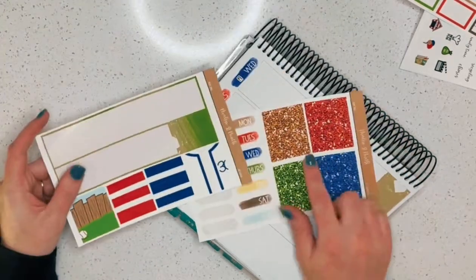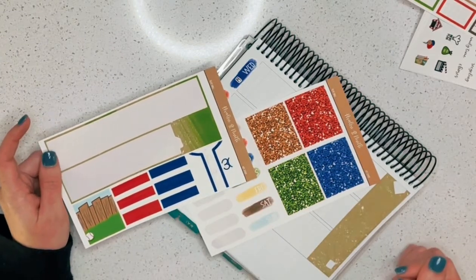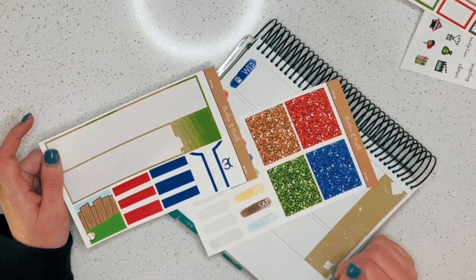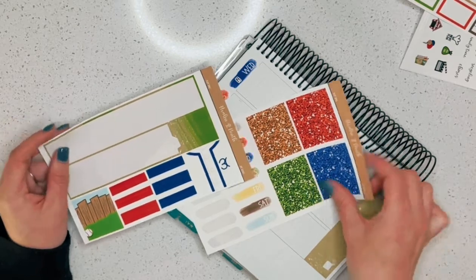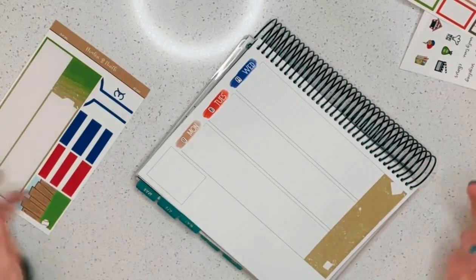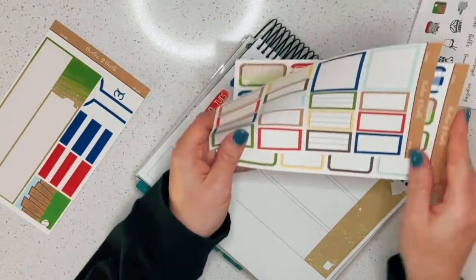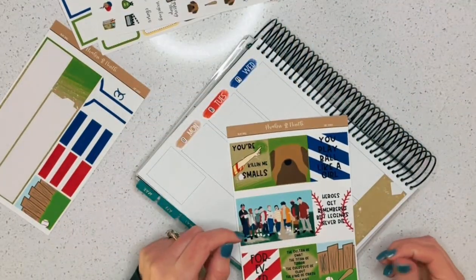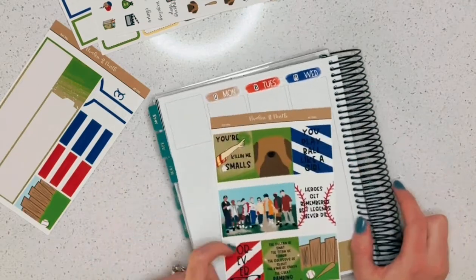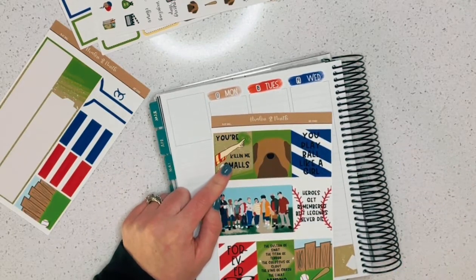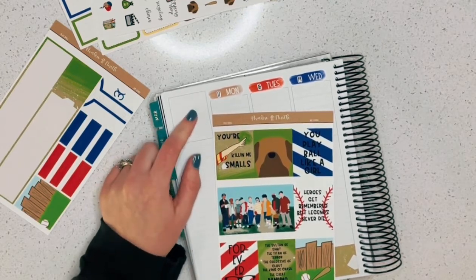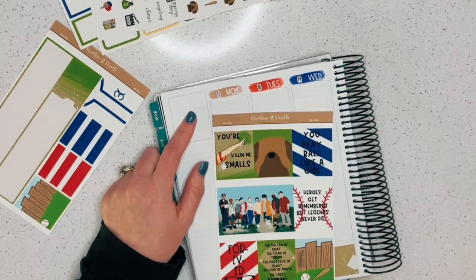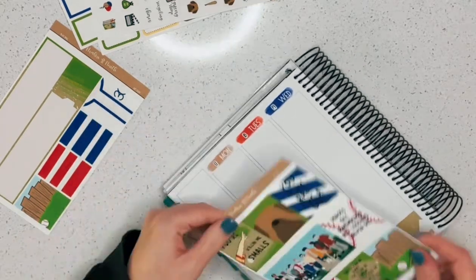I'm trying to decide if I want to use the glitter headers or the patterned headers. I think I might use the patterned headers since it is my husband's birthday week and I know he's not, he wouldn't be a huge fan of the glitter stuff. So not that he's really going to use my planner or anything, but you know, just thinking of those things. So you're killing me, Smalls. That's my husband's favorite line. And I kind of want to put that up here since it's his week.